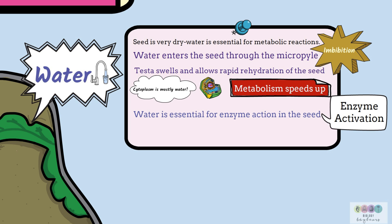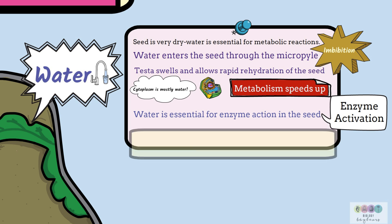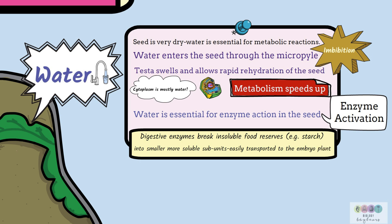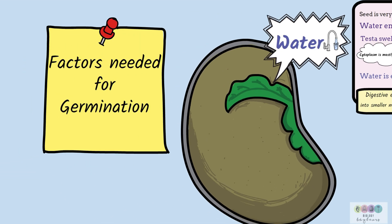Water is important for enzyme activation — specifically activating digestive enzymes in the seed, which are going to break down insoluble food reserves such as starch into smaller, more soluble subunits that are easily transported to the embryo plant.